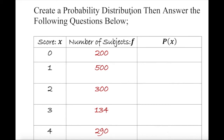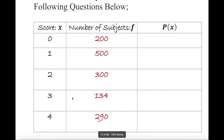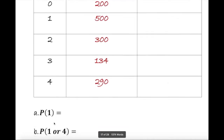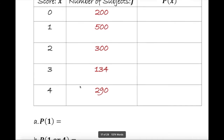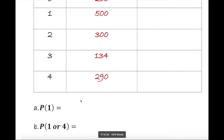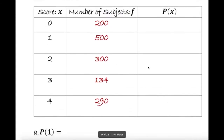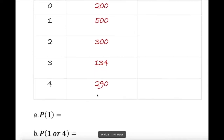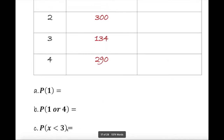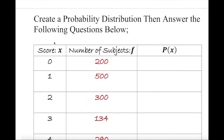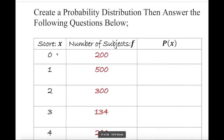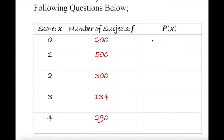We have a probability distribution table and I'm going to answer some questions based on it. What is the probability of 1? What is the probability of 1 or 4? And what is the probability of less than 3? We're going to look for those using some formulas.